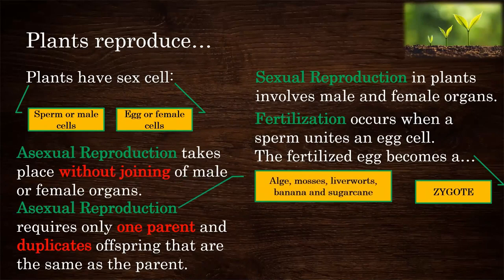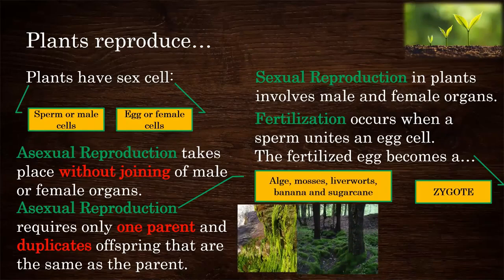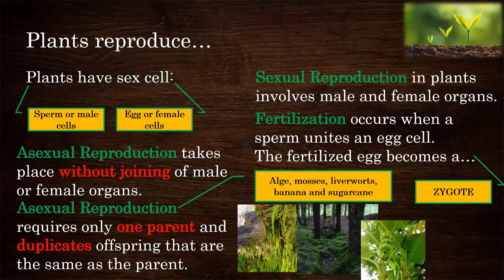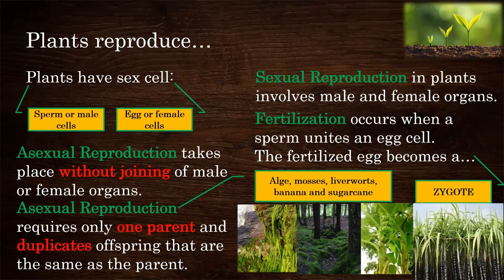Plants that undergo asexual reproduction include algae, mosses, liverworts, banana, and sugarcane. Here are examples of the mentioned plants: algae, mosses, banana tree, and sugarcane.